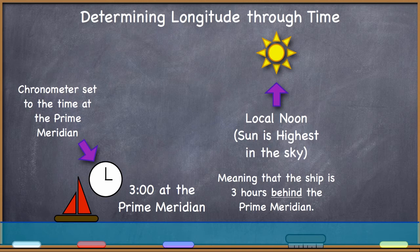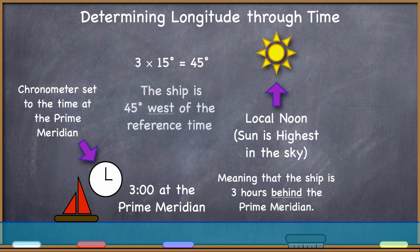Three hours. He is three hours behind the reference time. It's noon for him right now because he's looking at the sun highest in the sky. He knows that it is currently three o'clock in the afternoon at the prime meridian. He knows that the Earth rotates at 15 degrees per hour. He is three hours behind.